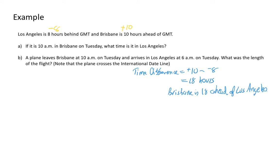Now that we know the time difference, we can calculate the time in Los Angeles when it's 10am in Brisbane. Starting with Brisbane at 10:00, and knowing that Brisbane is ahead of Los Angeles, we take away 18 hours from that time. 10 minus 18 gives us negative 8. Because it's negative, it indicates there has been a change of day.